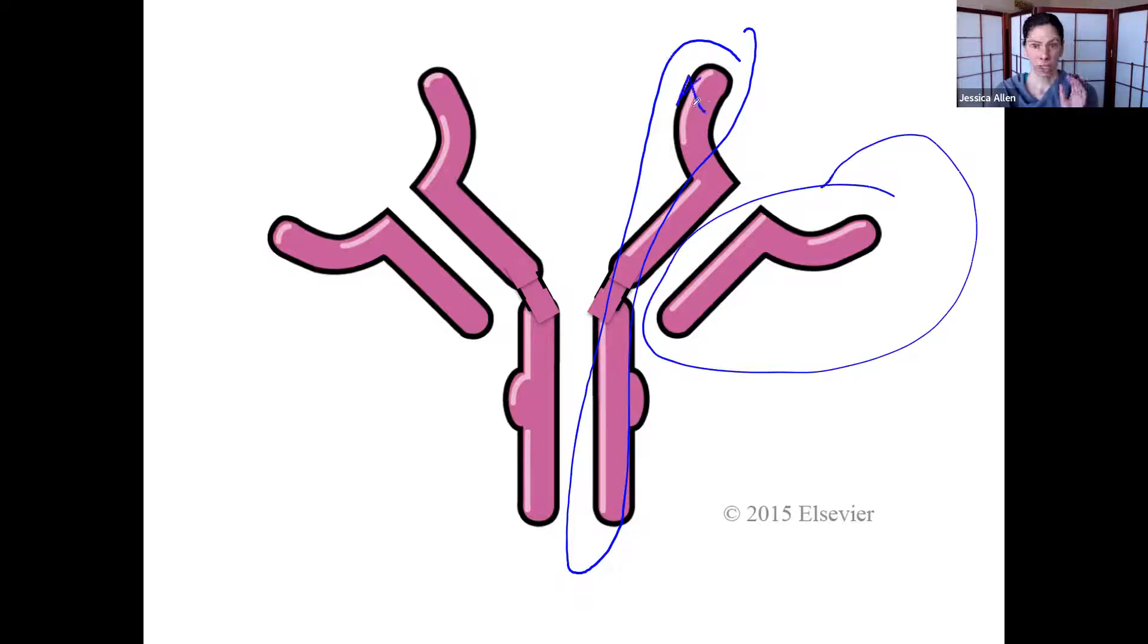The two heavy chains are exactly the same, mirror images of each other. Same with the light chains. Each of these light chains are exactly the same on a single cell. So each cell makes one heavy chain, one light chain, making two copies of each of those to put together.